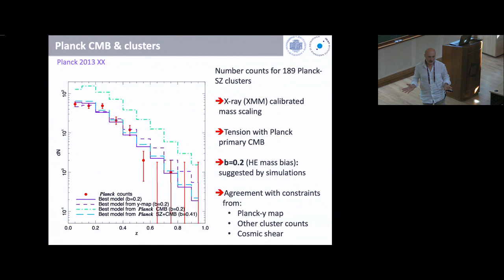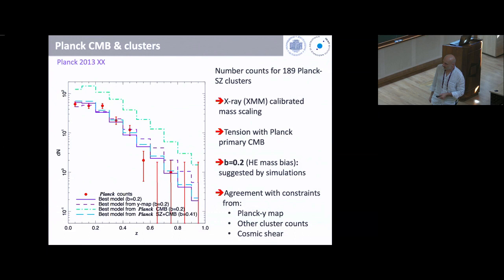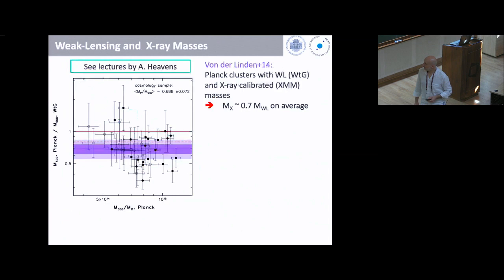We demonstrated a bias up to 30 percent is possible, but it's not clear this is the solution, since it relies heavily on the assumption that simulations provide the correct description of the ICM. This tension probably also has another hidden problem, because the degree of bias required is probably larger than what we find in the real situation.